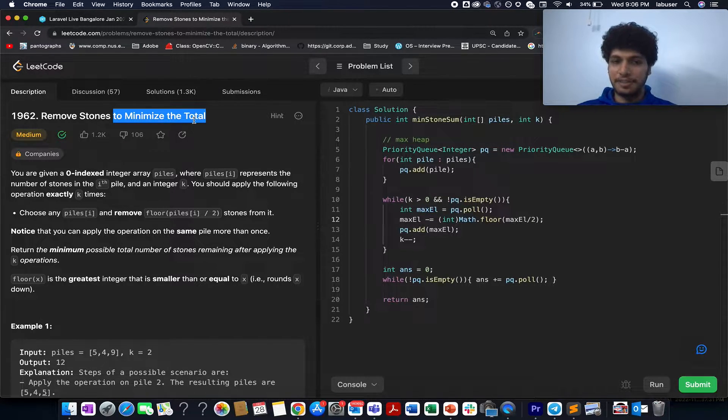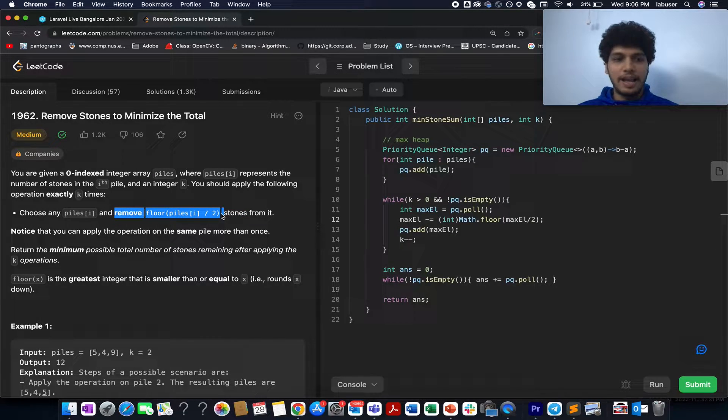The question says you are given a pile of stones in a form of an array and an integer value k. What you can do, you need to perform k operations on this pile of arrays and with each operation what you can do, you can pick up any one element from this pile, you can remove those many stones from that pile. You need to identify the minimum possible total number of stones that remain after applying the operation k times. So you need to perform these operations k times and with each operation you can remove floor of any element on the pile divided by two stones from it and you need to identify the minimum possible ones that remain in total finally.